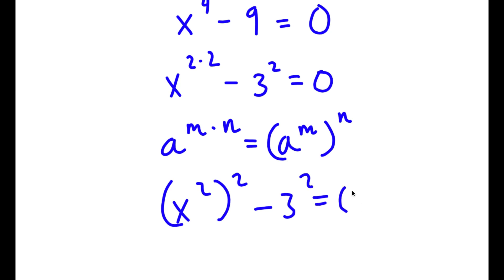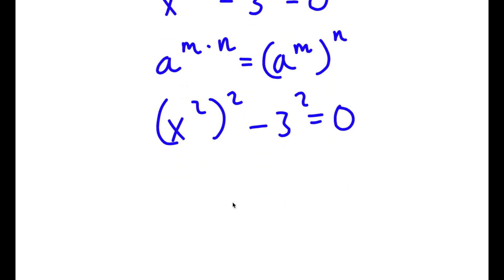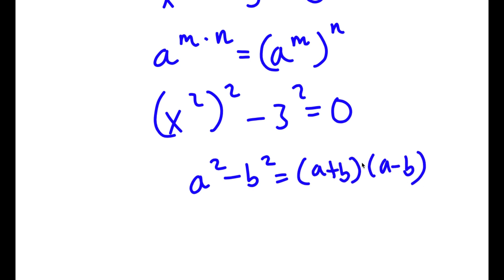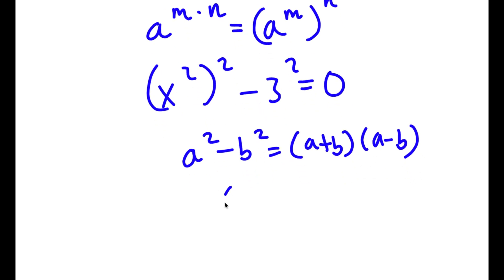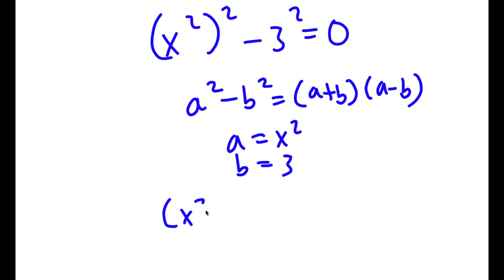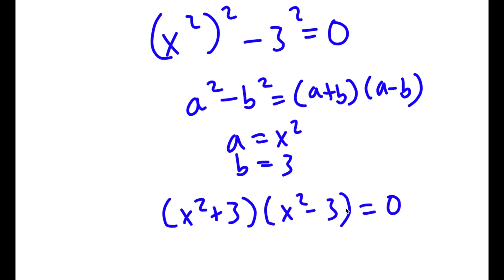Now I have (x squared) to the power of 2 minus 3 squared equals 0, which fits the difference of squares form a squared minus b squared equals (a plus b)(a minus b), where a equals x squared and b equals 3. So this factors as (x squared plus 3)(x squared minus 3) equals 0.